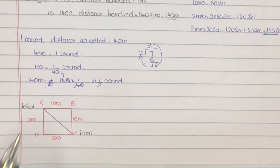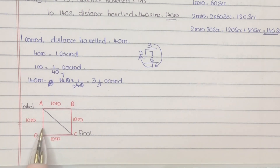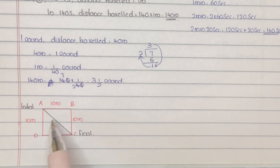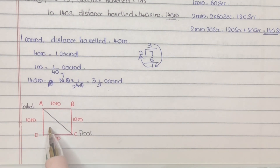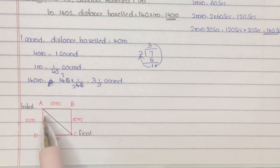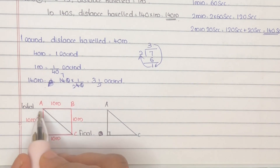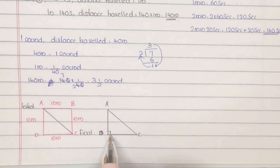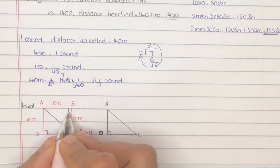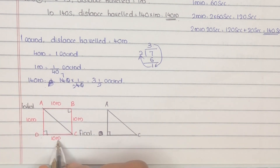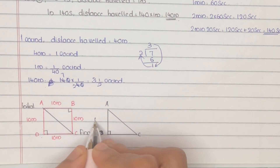The length AC can be found by noting this is a square, so all angles are 90 degrees. We consider the right-angle triangle ADC, with the right angle at D. AD = 10 metres and DC = 10 metres, since it is a square.